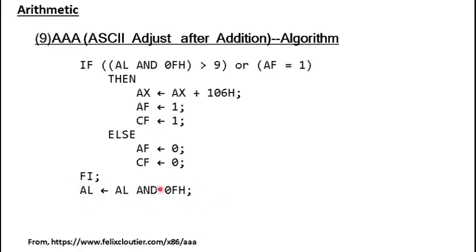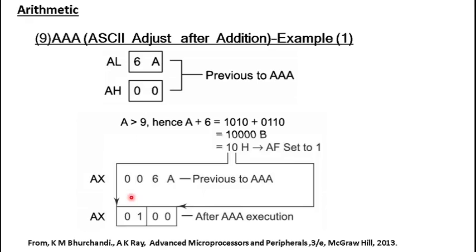In unpacked BCD representation, only one digit is kept in a byte. So in the case of AAA, if the current representation in the lowest nibble of AL is greater than 9 — meaning it's not a proper BCD digit — 6 is added to that nibble and the carry is passed to the next higher byte. Finally, it is made sure that only one digit is represented in the lowest byte, effectively masking AL with 0x0F.